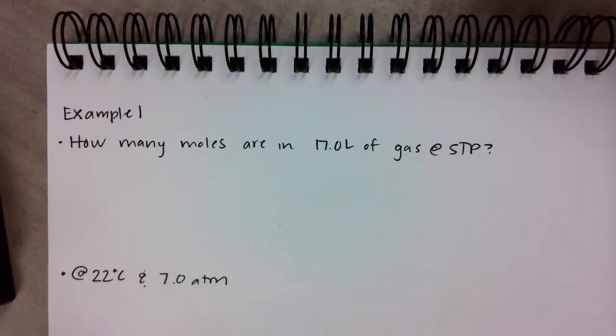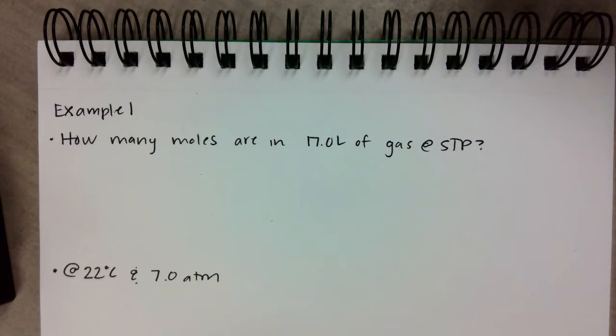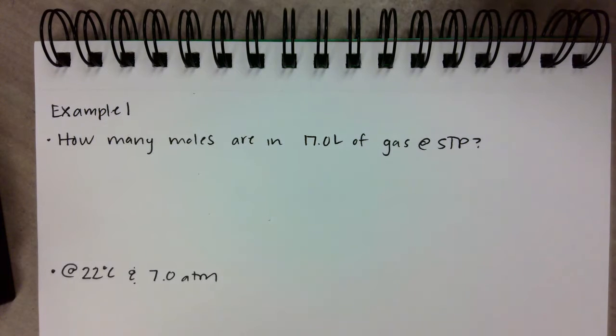Alright, hopefully you gave the problems a try for the examples and you've made it to the answers to see how things are going. I'm proud of you because not everybody does, but you are in so much better shape than those who don't. Our first example asked two parts: how many moles are in 17 liters of gas at STP, and then how does that change at 22 degrees Celsius and 7 atmospheres.